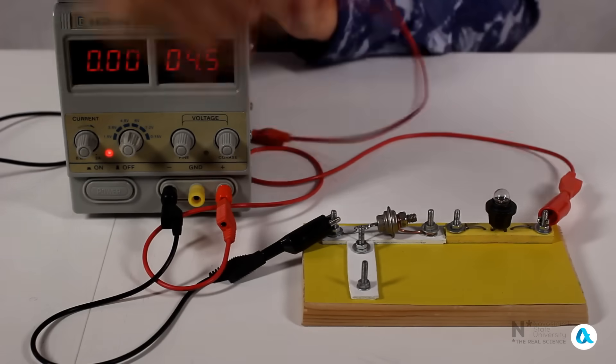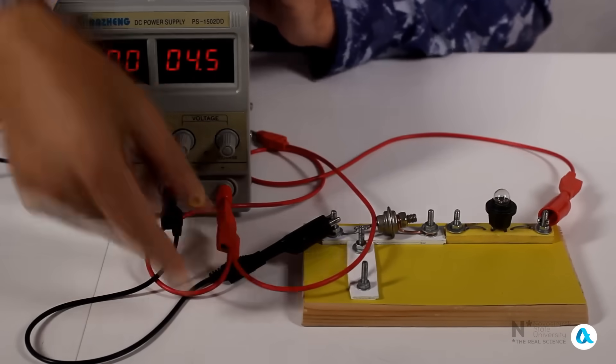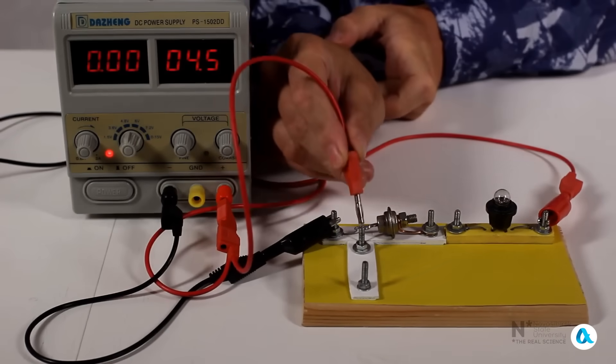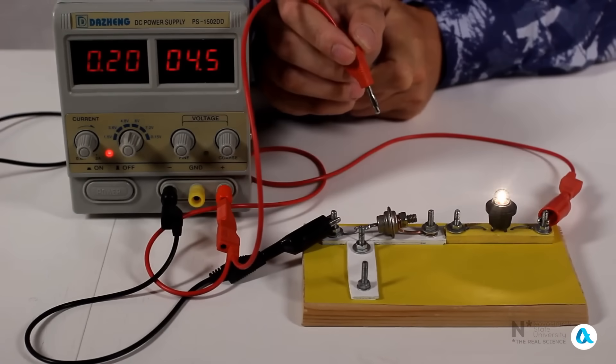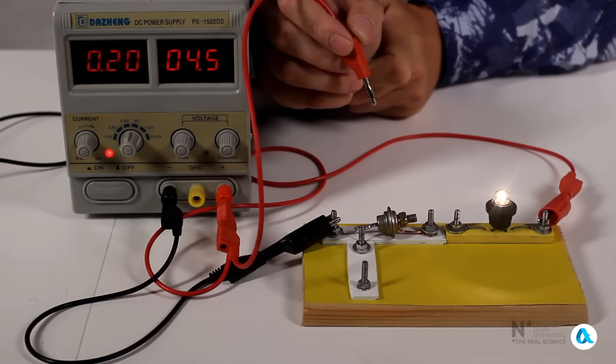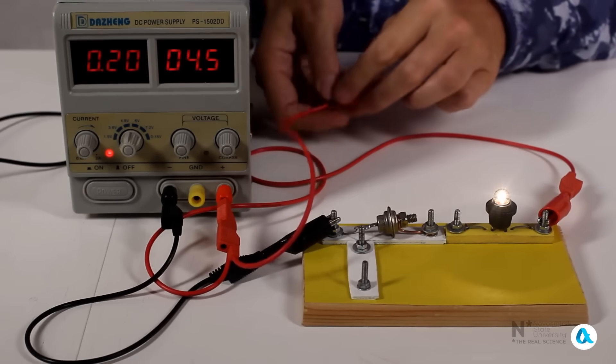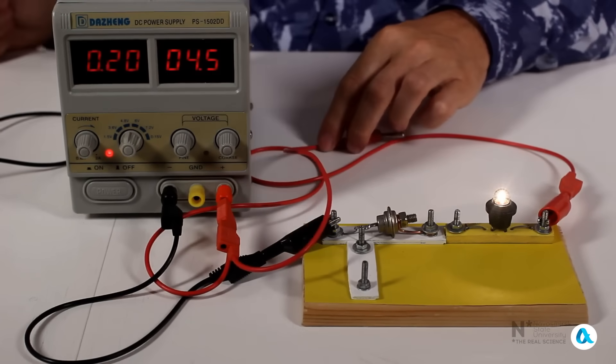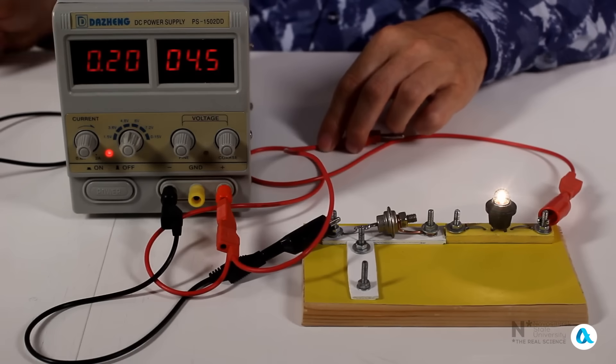Now I will connect another wire to the positive terminal, and momentarily touch the gate electrode with the other end of this wire. And the bulb lit up, the thyristor opened. How can I turn it off now? Of course I can turn off the power source, but that's not very interesting.